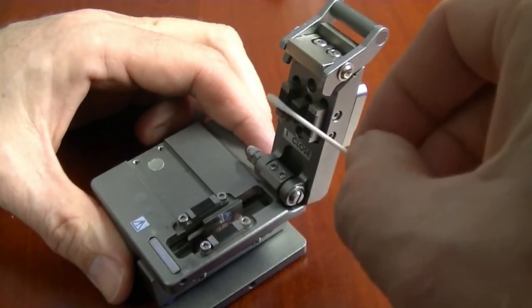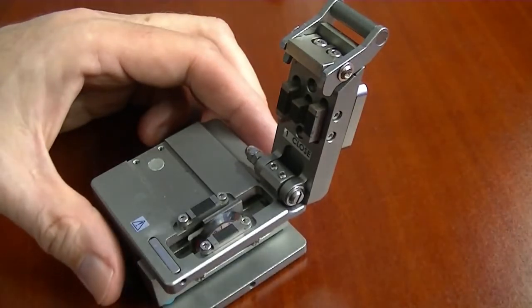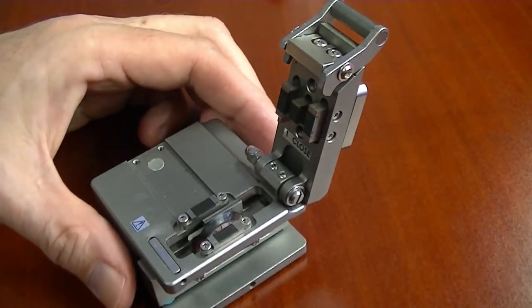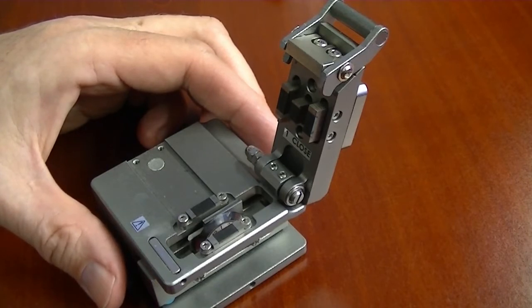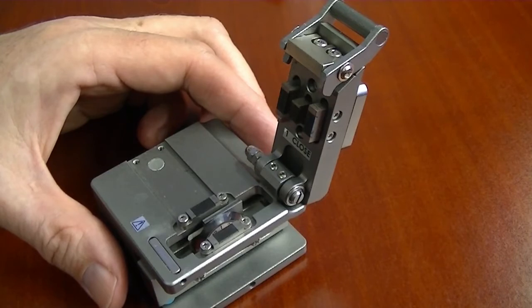Fiber shards on the presser pads will prevent the cleaver from cleaving. Not fully removing the 250 micron acrylic coating from the fiber will also prevent the cleaver from properly cleaving. Make sure to check for those two conditions before attempting to adjust the cleaving blade height.